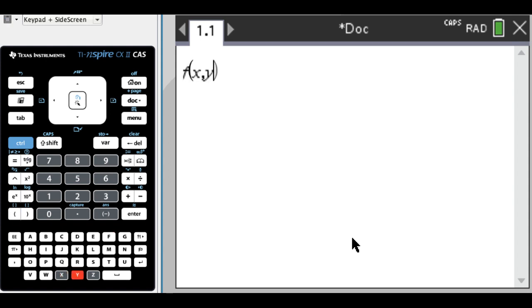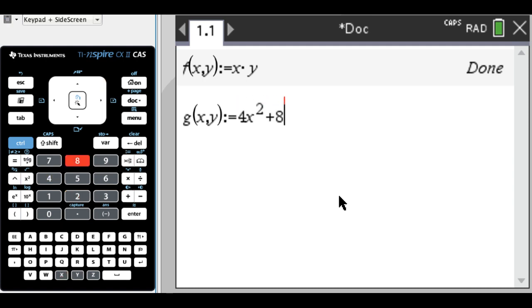First thing I want to do is I'm going to define f and g, so f is the function we're going to optimize, and g is the constraint curve. So I'm actually just going to use the problems that are in the videos that I did by hand. So f of x, y, colon equals which is control templates, x times y. Press enter, and then g of x, y, colon equals 4x squared plus 8y squared minus 16.